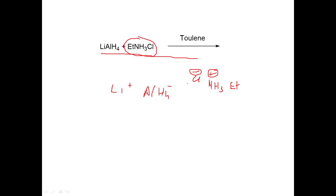Lithium aluminum hydride is a hydride donor — it will donate H⁻. This H⁻ will attack the most acidic proton. In this case there is nothing to reduce, so it is going to attack the most acidic proton. The hydrogen attached to the nitrogen is the most acidic proton, so H⁻ is going to attack the nitrogen.